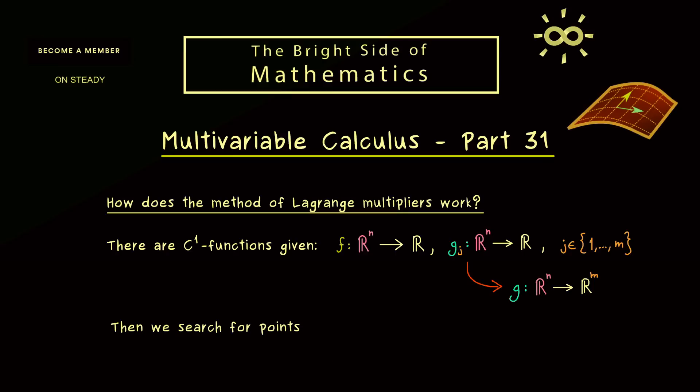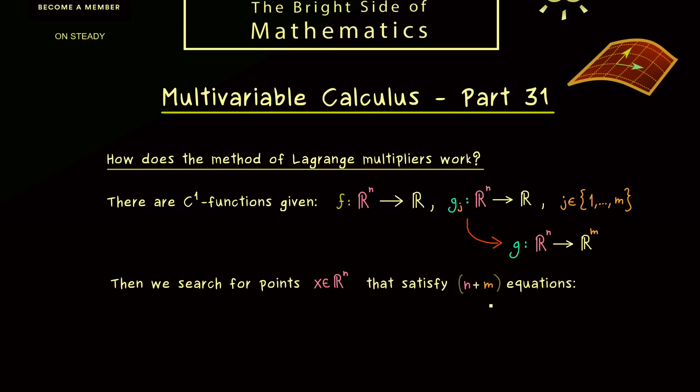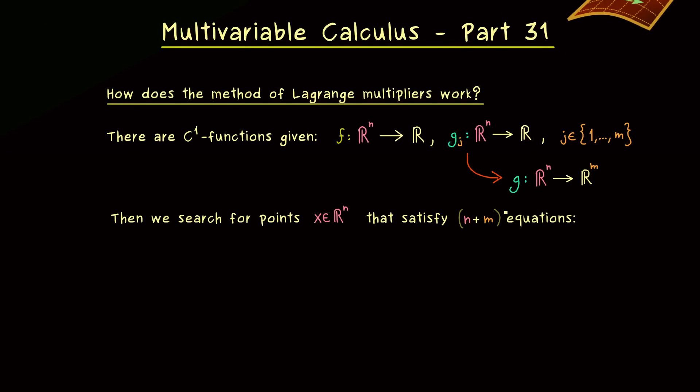In the next step of the method, we search for points x in the domain of f, so x in ℝⁿ, that satisfy some equations. More precisely, we have n plus m equations they should satisfy. First we have m equations for the constraint, so we want g(x) equal to zero, where we have the zero vector in ℝᵐ on the right-hand side.